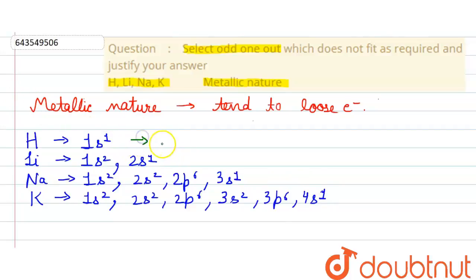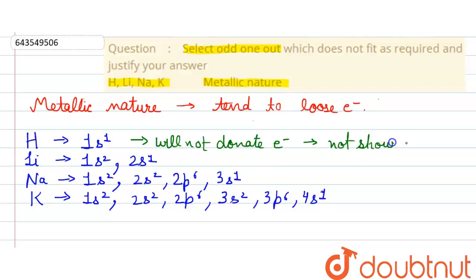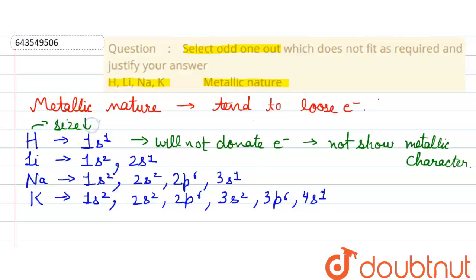Hydrogen cannot easily donate or lose its electron, so it does not show metallic character. This is because the size of hydrogen is very small, which means its electron is very close to the nucleus. Since the nucleus is positively charged and the electron is negatively charged, the electron is highly attracted towards the nucleus, making it very difficult to remove.